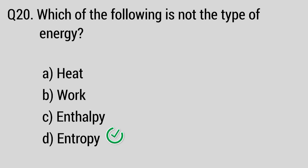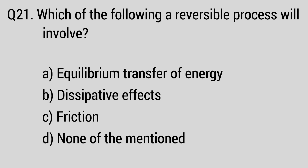Question number 21: Which of the following does a reversible process involve? The right answer is option A, equilibrium transfer of energy.